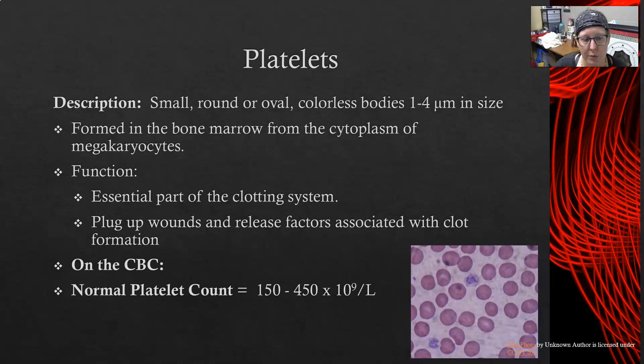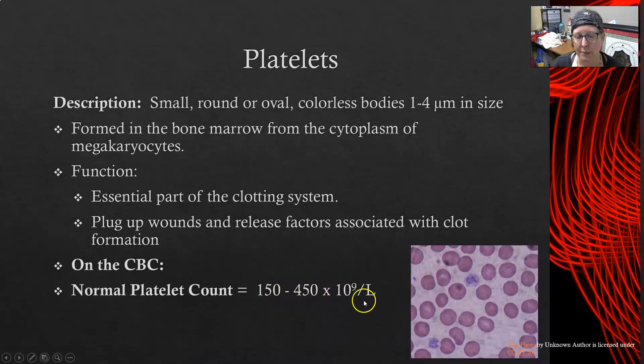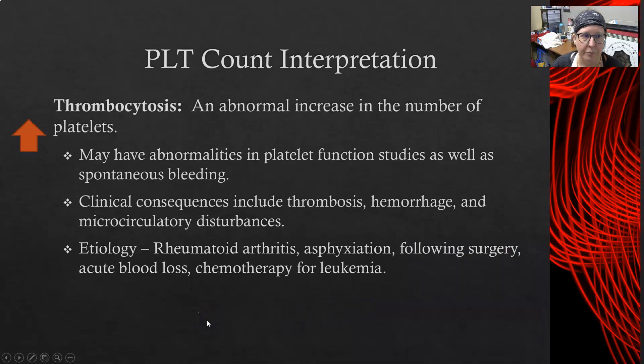On your CBC report, your normal platelet count is going to be 150 to 450 times 10 to the 9 per liter.